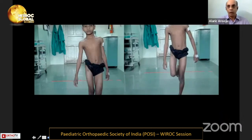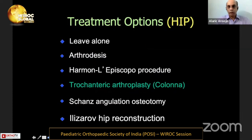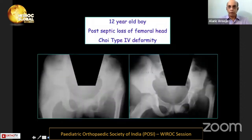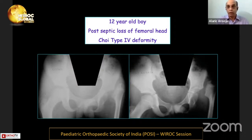The telescoping and limb length discrepancy all need to be addressed in treatment. There are various options reported in literature, but very few cases exist because this is not a common presentation. The brief here is to discuss the role of the Colonna trochanteric arthroplasty. An example is a 12-year-old boy with Choice Type 4b / Johri Type 2, showing a well-developed trochanter and a fairly well-developed acetabulum — one of the most important criteria for success of this procedure.